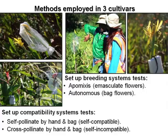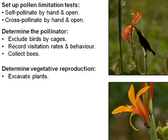The methods employed are based on standard pollination experiments, which were done in three cultivars: the red cultivar, the orange-red, and the yellow cultivar. I set up breeding systems experiments and compatibility systems tests. I also tested if these plants are affected by pollen limitation, if they can reproduce vegetatively, and if they have a suitable pollinator — this is where I would exclude birds.